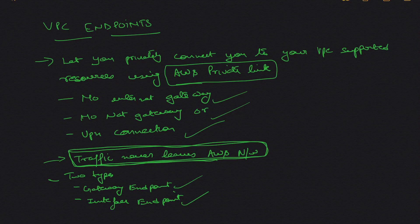Why are there two endpoint types — gateway and interface — instead of just one? There's some history behind this. VPC gateway endpoints were launched somewhere around 2015 for S3, and somewhere around 2017 they launched the endpoint for DynamoDB.